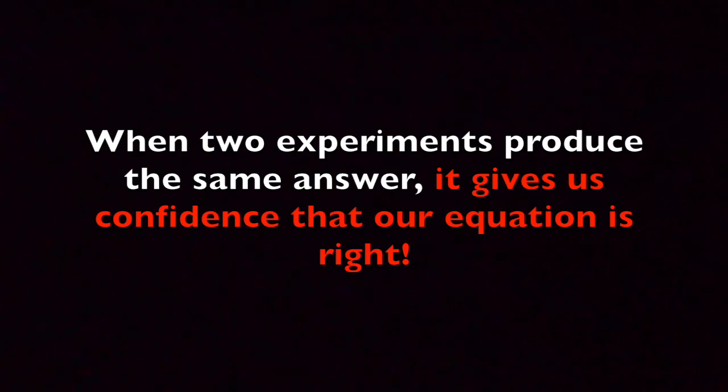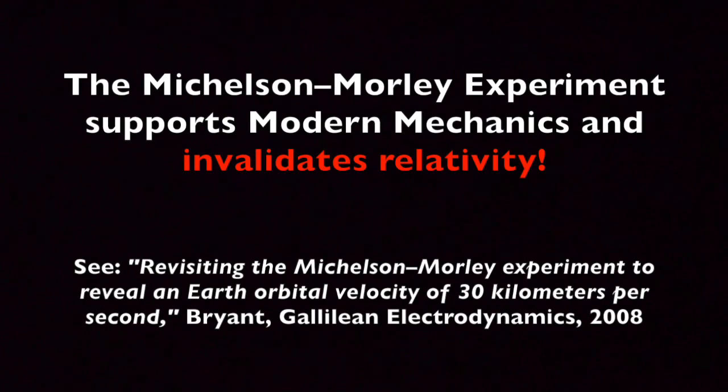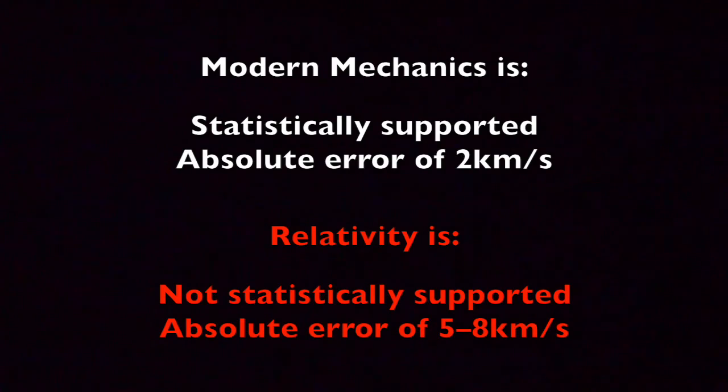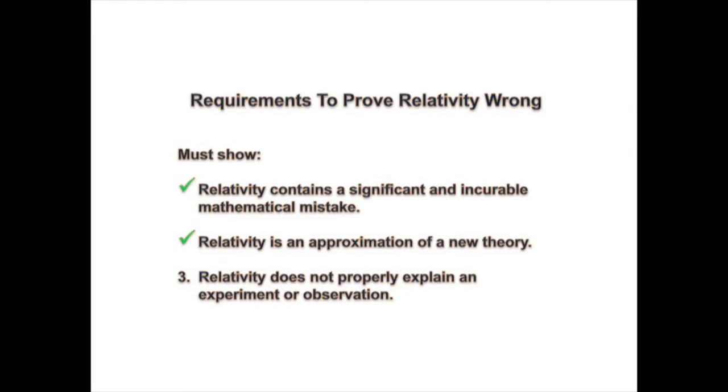So I've shown that the modern mechanics-based equation predicts 30 kilometers per second, the experiment produces 30 kilometers per second when properly analyzed, and that modern mechanics has less error when measured in absolute terms, outperforming relativity. This means I've satisfied the third condition by showing that relativity fails to properly explain the Michelson-Morley experiment.